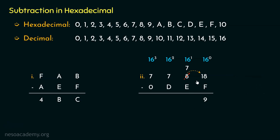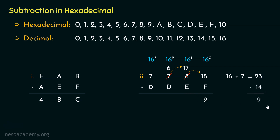Focus on the next unit. We have 7 as the minuend digit and the subtrahend digit is E. From 7, we are trying to subtract 14, so we need to borrow once again. If we borrow from here, we will be left with 6 in the next place. We borrowed 10 — that is 16 — and add 7 to get 23. E is 14, so 23 minus 14 gives us the difference 9.